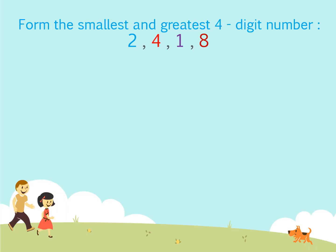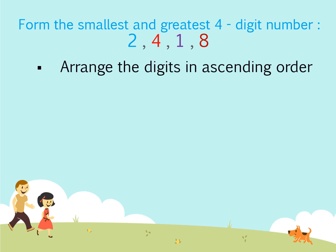Now let us try some questions. Form the smallest and greatest 4-digit number using the digits 2, 4, 1, and 8. To form the smallest number using these digits, we arrange the digits in ascending order, or we can say in increasing order. So we arrange the digits as 1, 2, 4, 8. Here 1 is smaller than 2, 2 is smaller than 4, and 4 is smaller than 8.